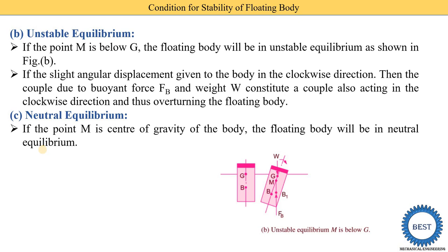The third case is neutral equilibrium. For neutral equilibrium, the metacenter point M and the center of gravity G are at the same point. When a small angular displacement is applied, the body is displaced to a new position instead of returning to its original position or moving further away — this is called neutral equilibrium.